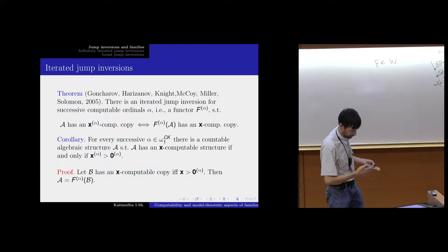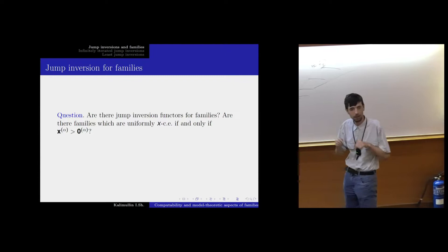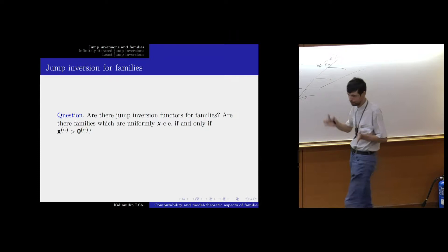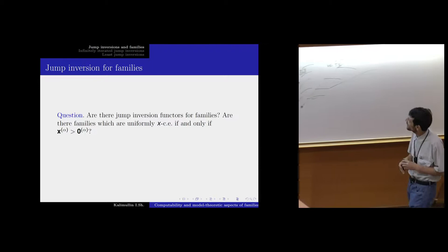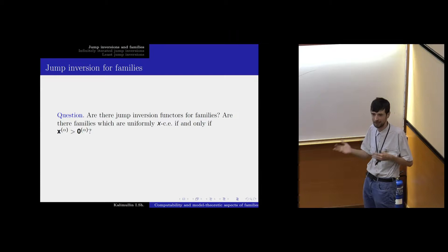It is interesting to know: is it possible to make jump inversions, at least for some levels, in the class of families? Because these are quite difficult structures. The family is quite a nice structure, and we can use a lot of computability theory methods here. It is quite studied. And in fact, in many cases the families are enough to build some counterexamples. Many counterexamples in computable model theory can be presented using this coding of some specific families.